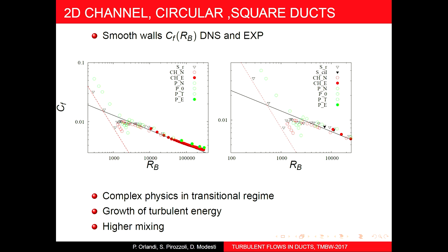We were able numerically — not only us but also others, for example, Van Moine — to simulate the pipe (P), the two-dimensional channel (CH), and the square channel (S). The laminar region is straight for all three geometries, and the turbulent pipe data agree well with high Reynolds number numerical results.